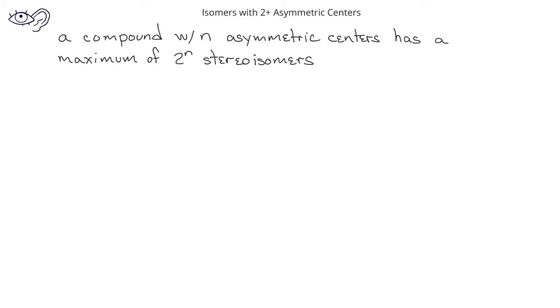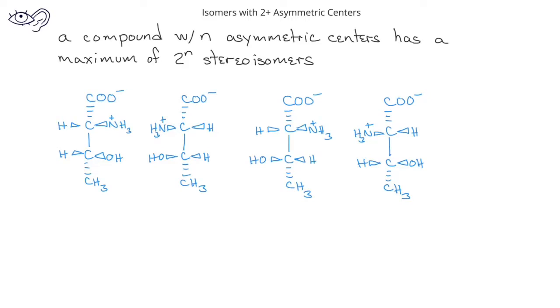All of the molecules we've seen so far have had only one asymmetric center. But what happens when you have more than one asymmetric center in a compound? Any compound with n asymmetric centers will have a maximum of 2 to the n stereoisomers. Let's look at these four molecules, which are all related to each other. The first two each have two asymmetric centers, and they are non-superimposable mirror images, so we would say those two molecules are enantiomers of each other. Molecules 3 and 4 also look like mirror images of each other, and since they're non-superimposable, these two molecules are also enantiomers of each other.